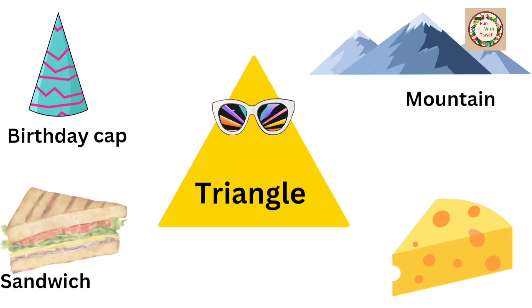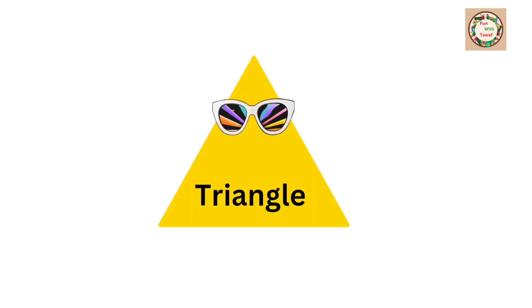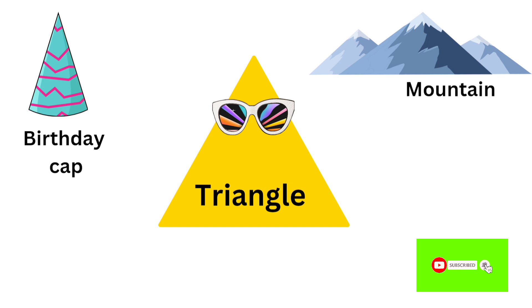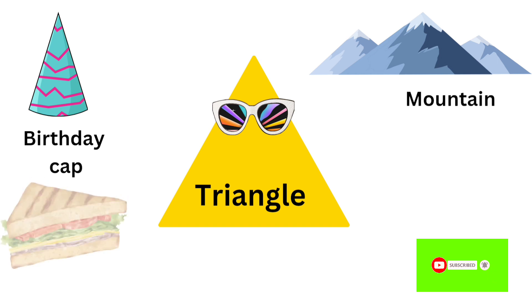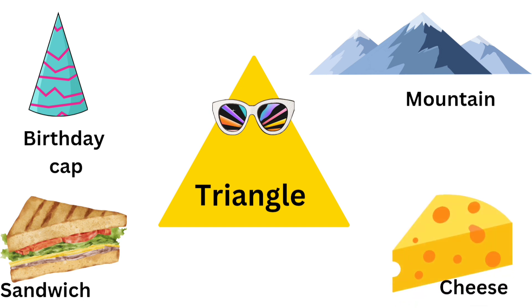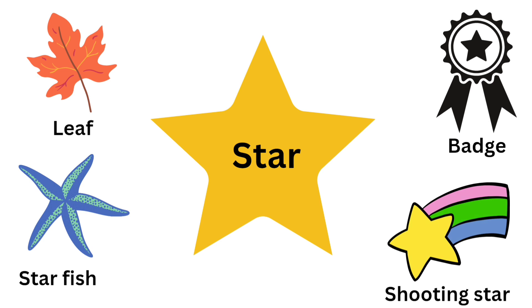Biscuit. Triangle shape — now look at some objects of triangle shape: birthday cap, mountain, sandwich, cheese. Star shape — now look at some objects which are in star shape.